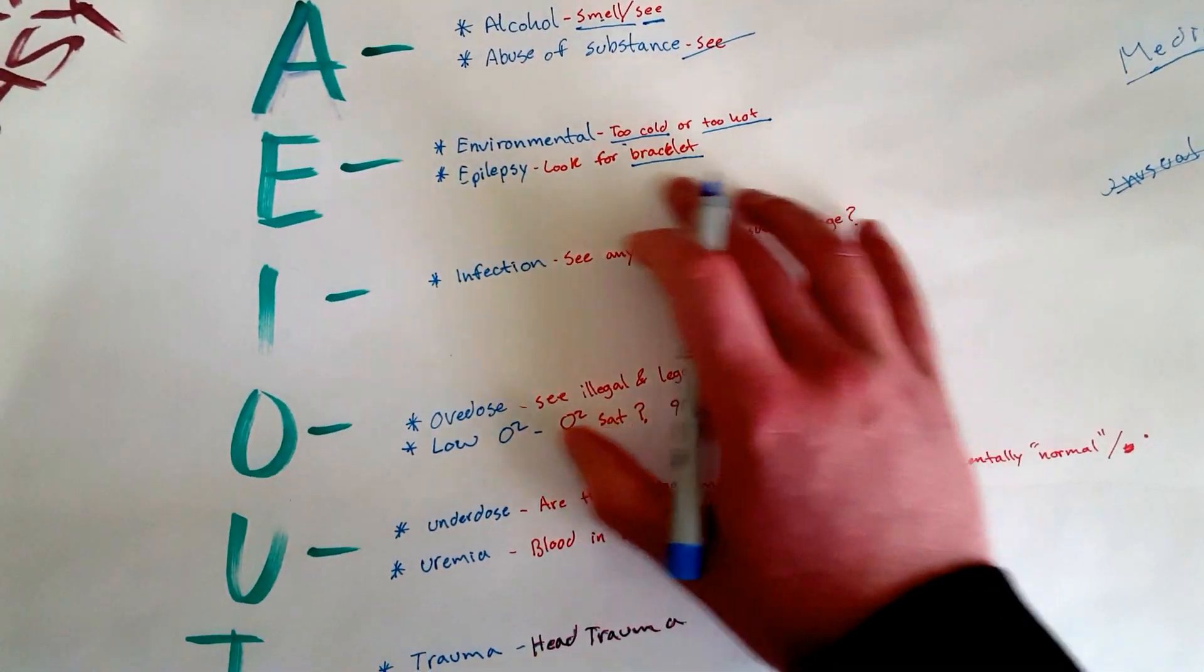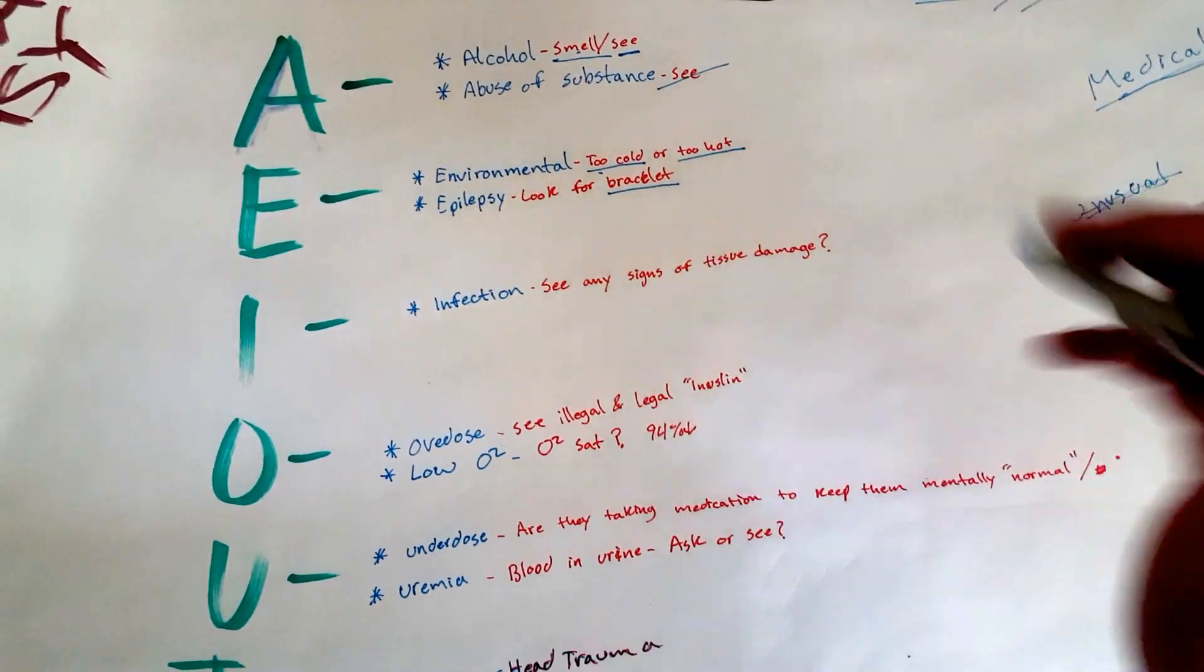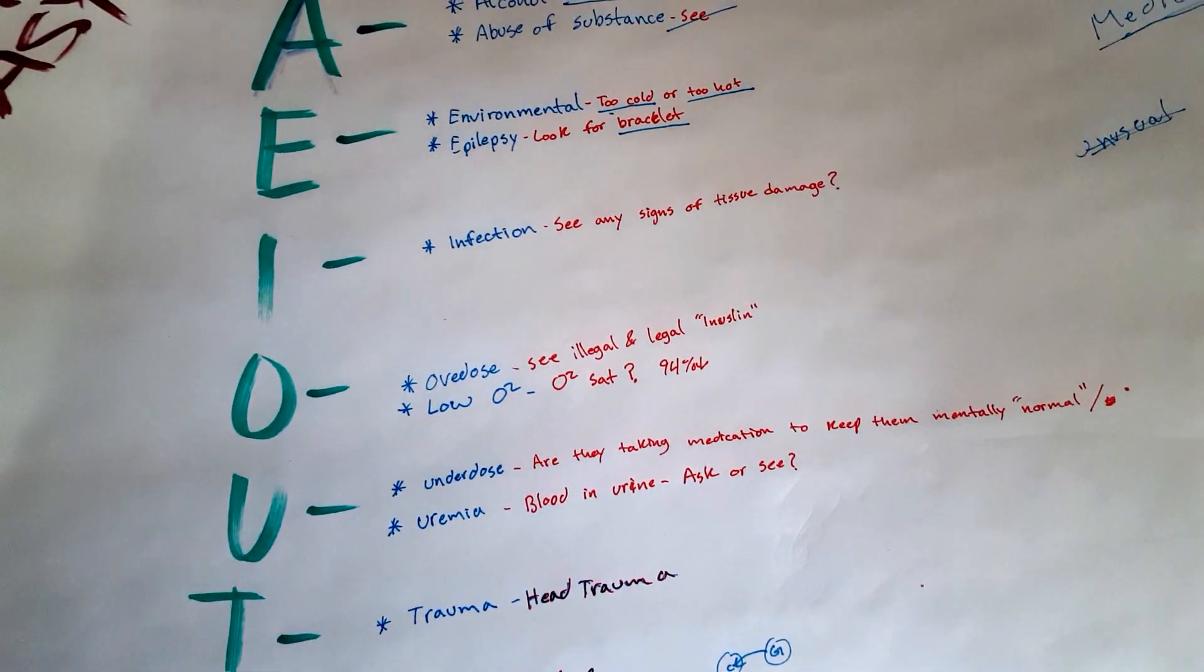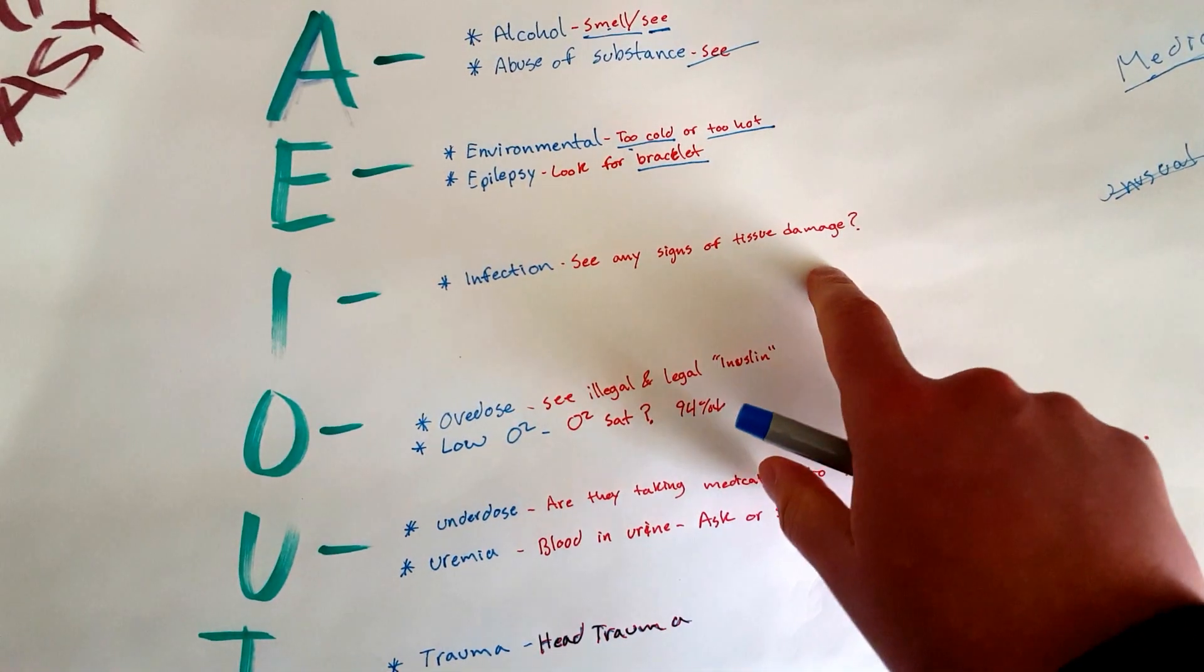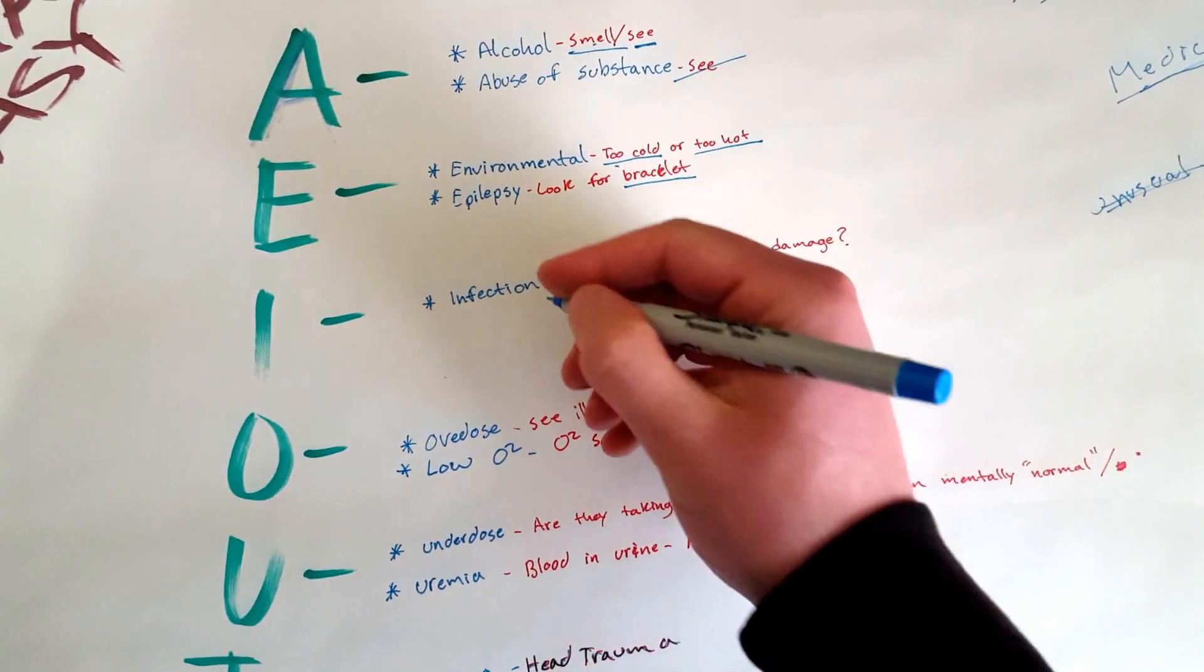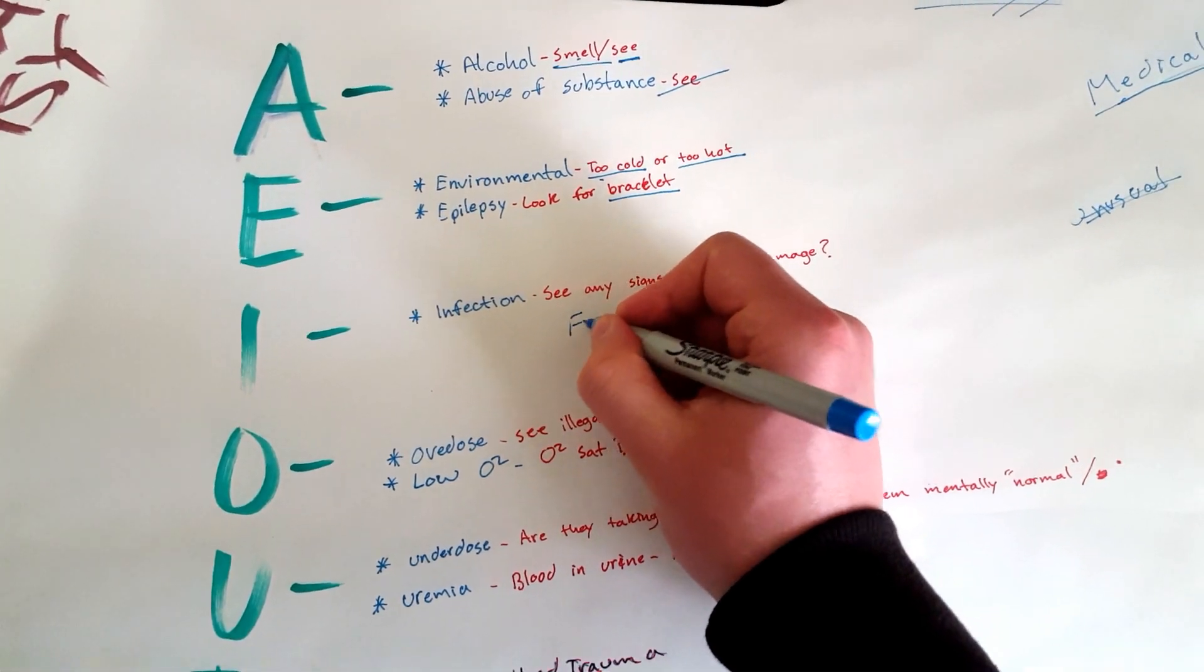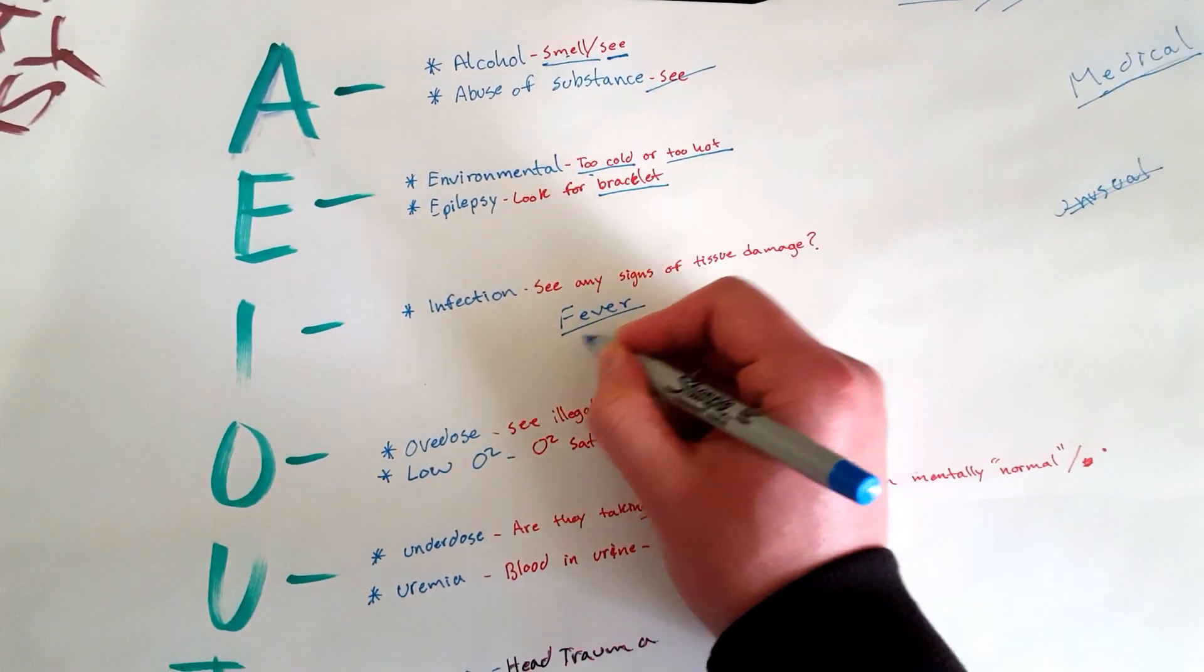So that's why you want to look for this. Do they have a bracelet? Is anybody there that can tell me if the patient has epilepsy? I: Infection. Infection will cause somebody to act irrational if it gets in the bloodstream and gets all over, and also from the high temperature, from the fever. The fever can actually cause the patient to act irrational and sometimes even hallucinate.